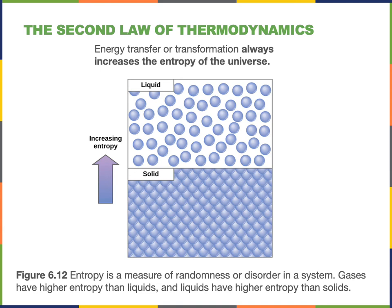Some chemical reactions will produce highly organized, more complex structures. In order to create such a highly organized structure with such low entropy, another chemical reaction will be required to release energy and in the process increase the entropy of the overall system. So while one structure can become highly organized, there must be a greater increase in entropy — an increase in disorder — to pay for the highly organized structure being formed.